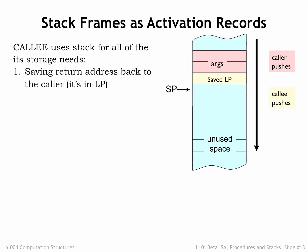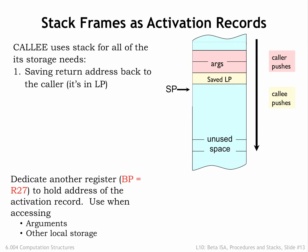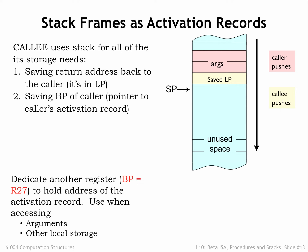The first action is to save the return address found in the LP register. This frees up LP to be used by any nested procedure calls in the body of the callee. In order to make it easy to access values stored in the activation record, we'll dedicate another register called the base pointer, which will point to the stack frame we're building. As we enter the procedure, the code saves the pointer to the caller's stack frame, then uses the current value of the stack pointer to make BP point to the current stack frame.